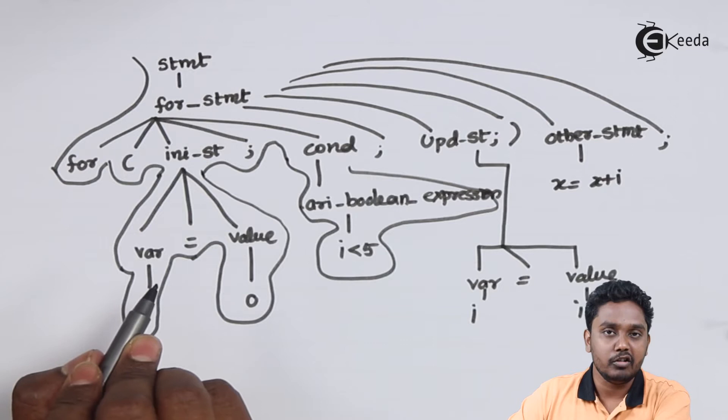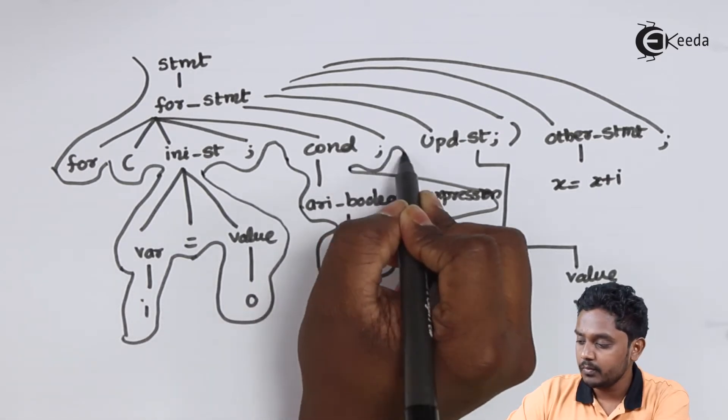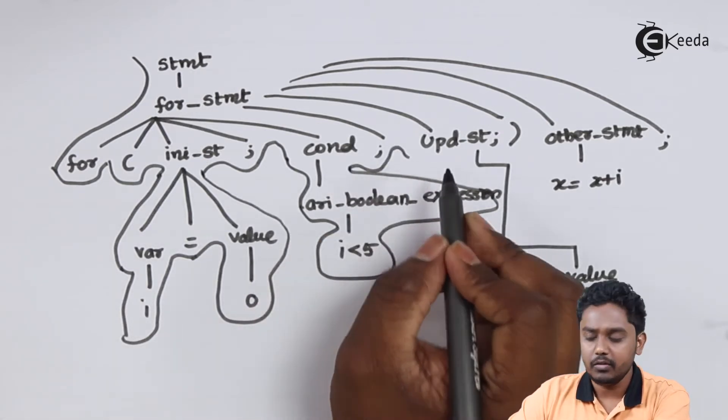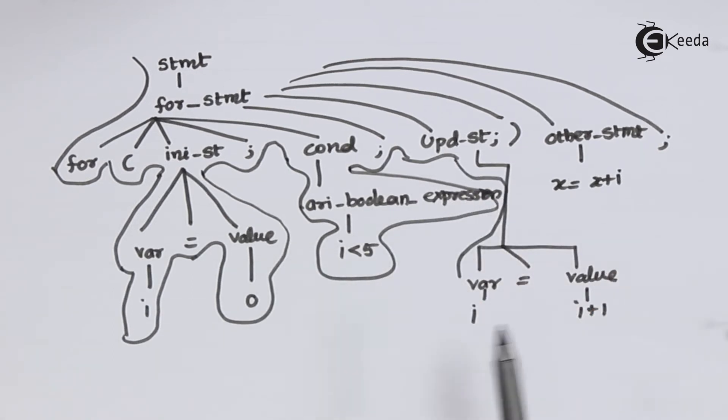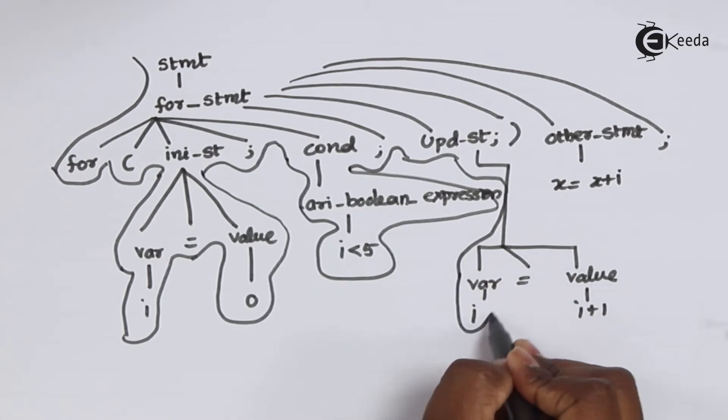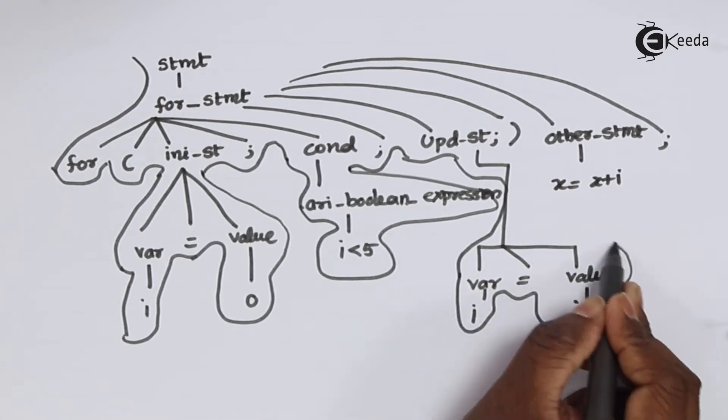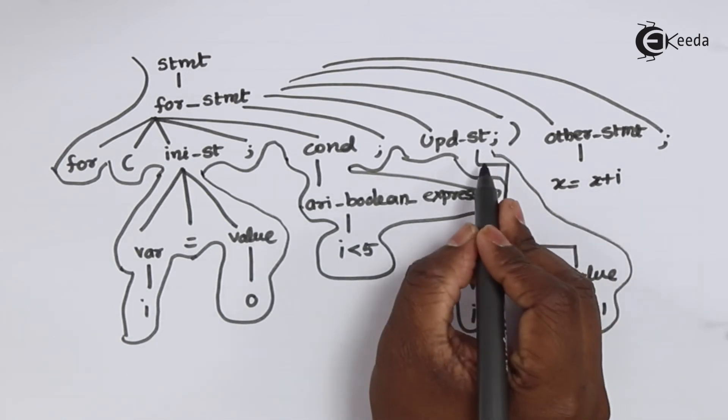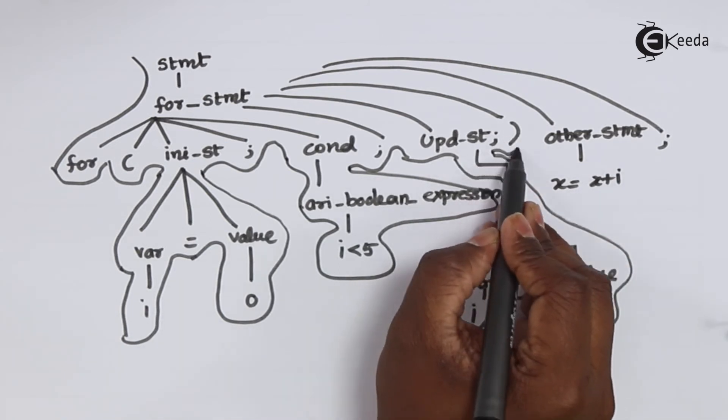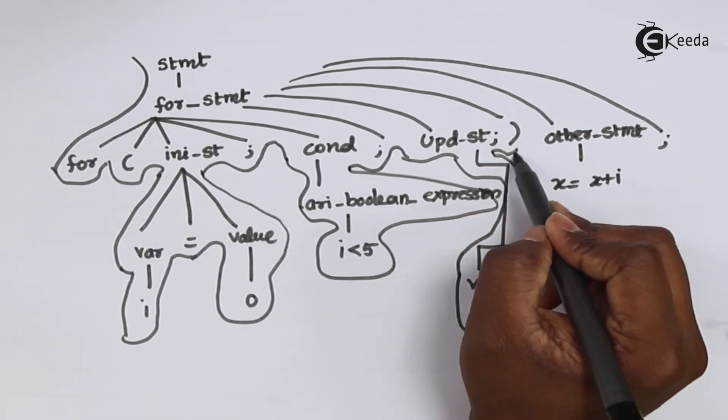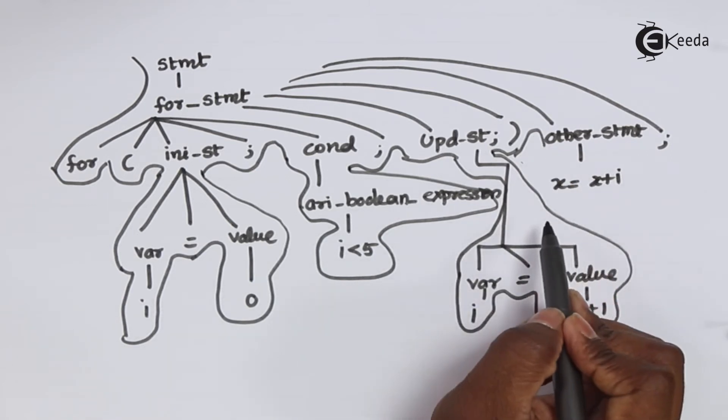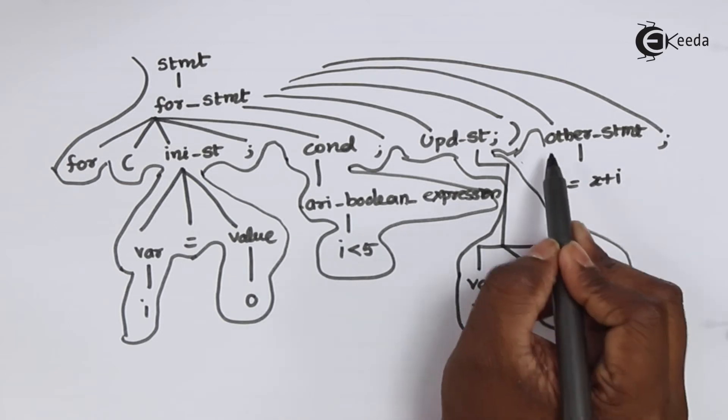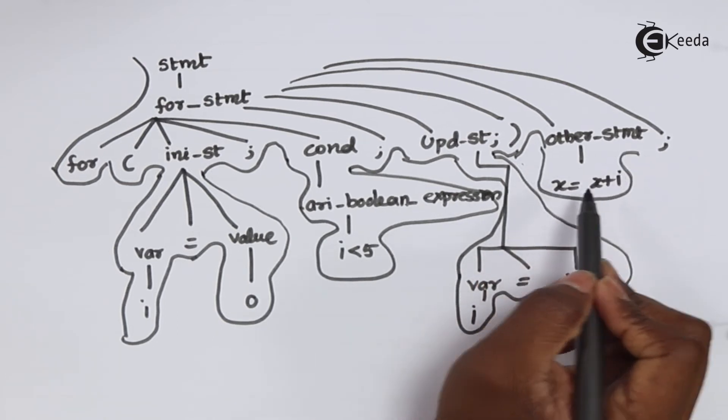Going back, we terminate condition with a semicolon. We go to the updation of the statement. The updation is of the form variable i equal to i plus 1 over here. Completing the updation, we close the bracket. And then we come to the execution of the statement. The statement to be executed over here is x is equal to x plus i which is parsed followed by a semicolon.